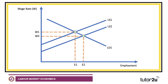That's a perfectly good standard diagram to draw, showing migration increasing the labour supply from LS1 to LS2, and driving down the equilibrium wage in the market. Good stuff — nothing wrong with that.